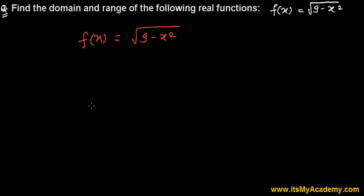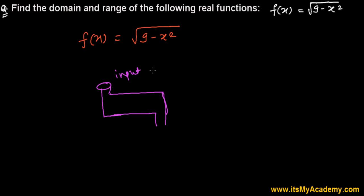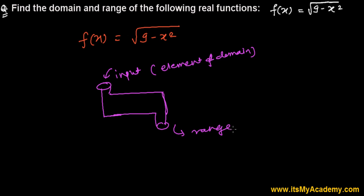Whenever we are talking about functions, think of it like a machine — this is how I learned. The input section takes elements of the domain, and the output gives the range. So if this is defined as a real function, what are the possible real numbers we can put inside this?